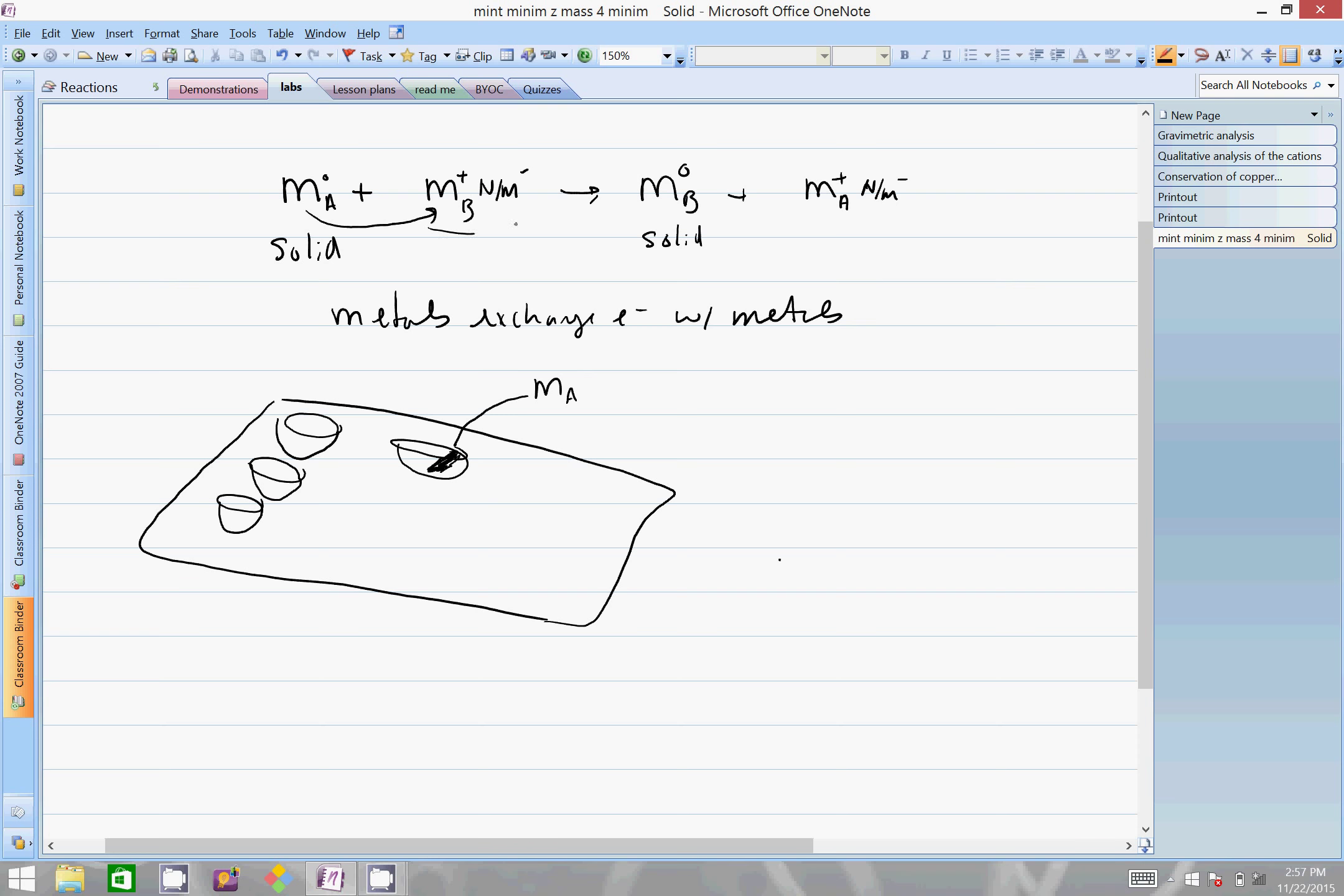Then I'm going to take the solution. This solution is ionic, it's aqueous, so metal B plus non-metal anion being aqueous would be located inside maybe a dropper bottle or in a beaker which you could then pipette out. This is now a solution.